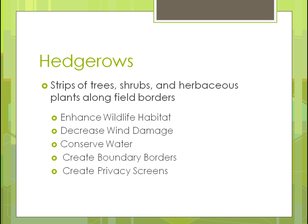Hedgerows, by definition, are just a strip of trees, shrubs, or herbaceous plants — herbaceous meaning they lose their leaves every year — planted along the borders of a field. Benefits include increasing wildlife habitat, decreasing wind damage by stopping wind or keeping soil from blowing away, conserving water because the grasses retain more moisture for plants, and creating boundaries and privacy screens for crops, animals, or yourself.